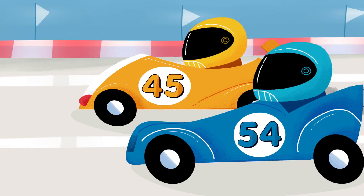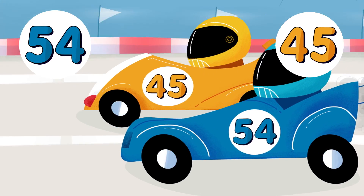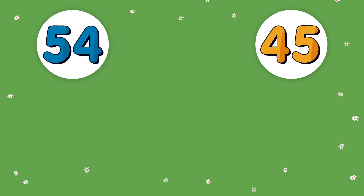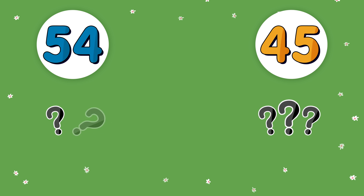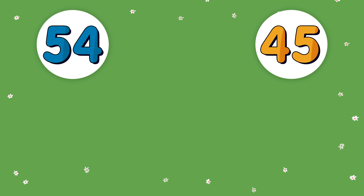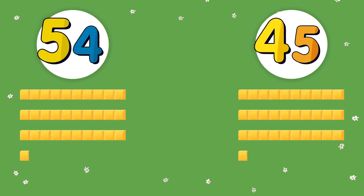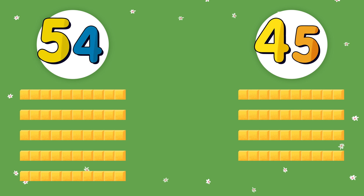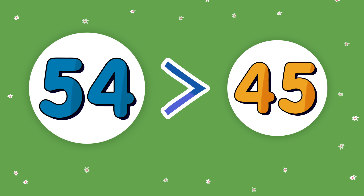I can hear some cars getting ready to race. Let's compare their numbers. Do you remember where we start when we compare? They both have fours and fives in their number, but the one with the 5 in the tens place has a greater value. That's why we should always start at the left with the largest place. 54 is greater than 45. That also means that 45 is less than 54.